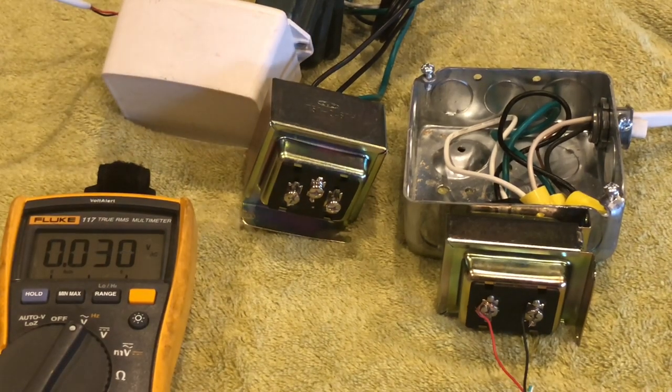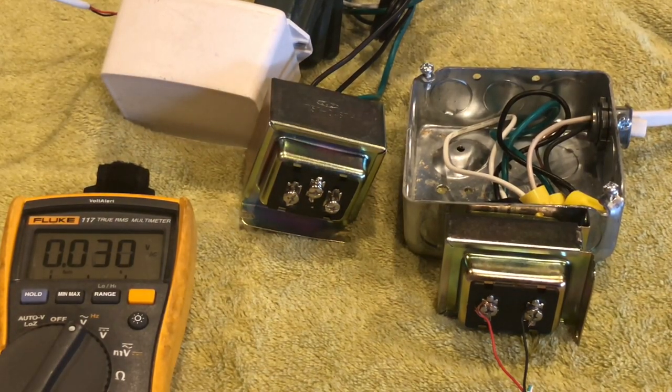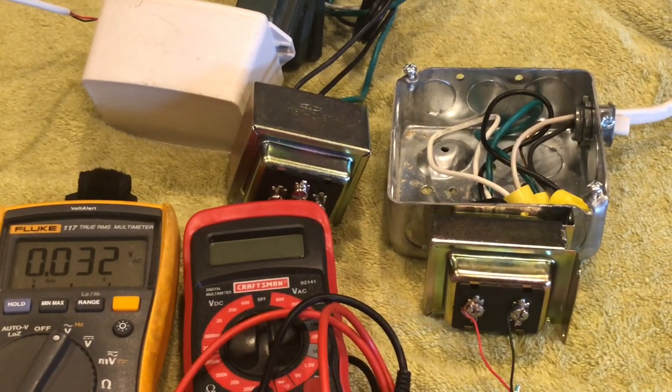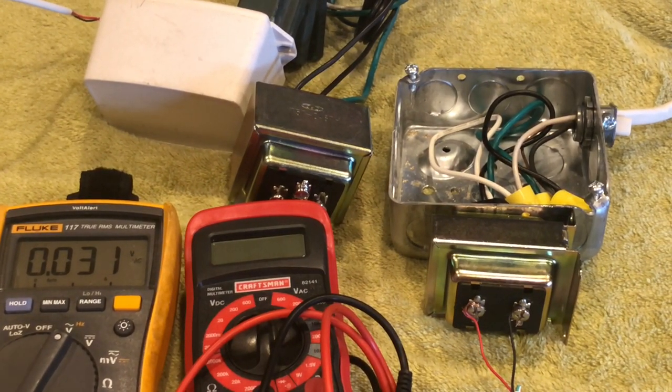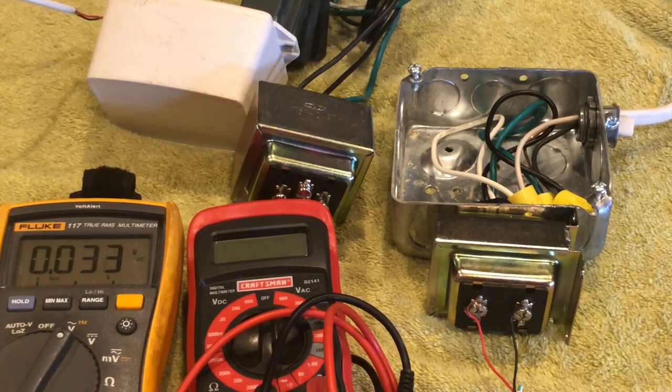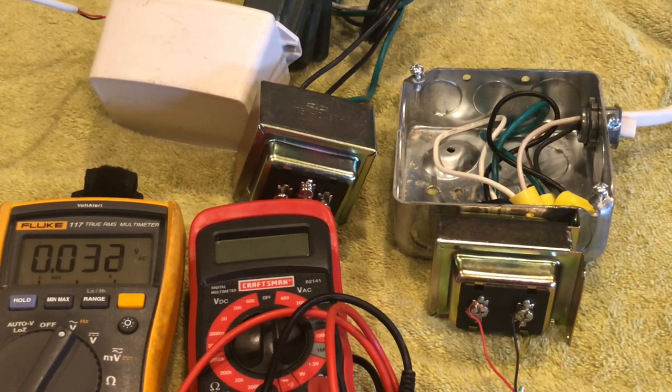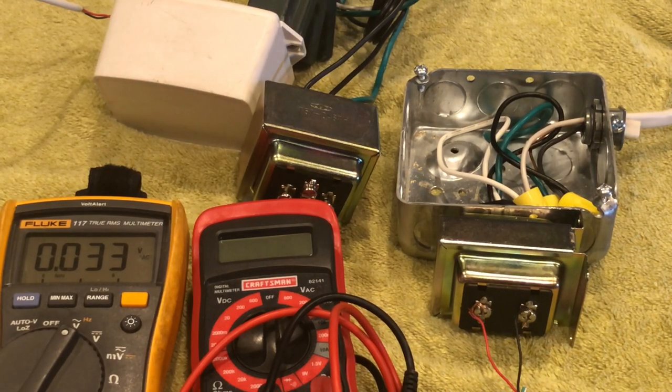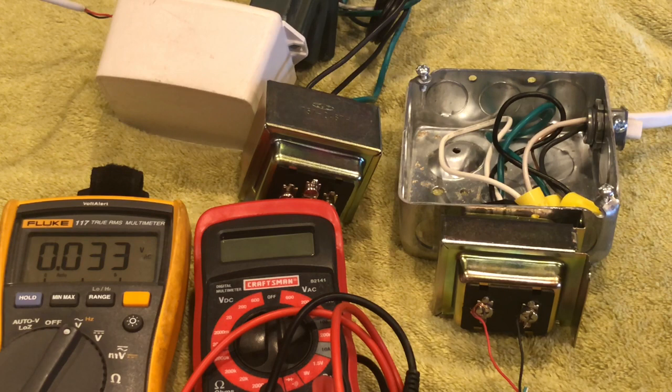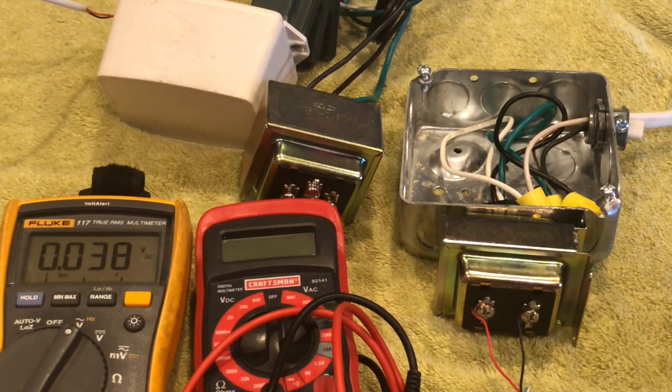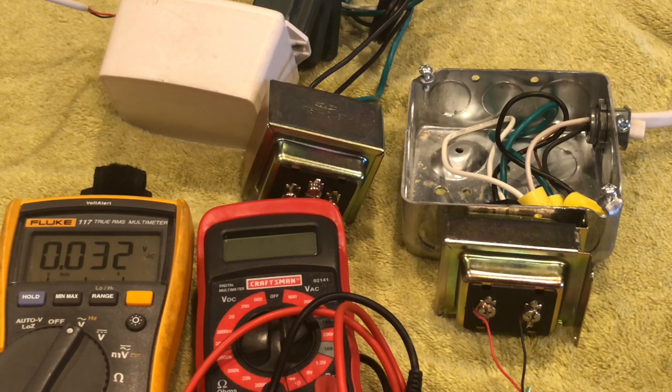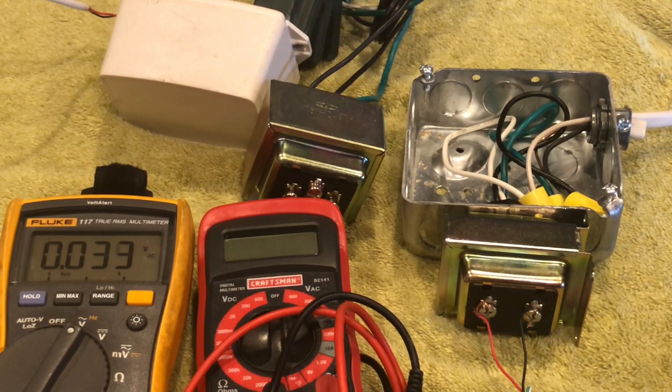So I would recommend that you pick up the Sears Craftsman meter. It's really actually a pretty good meter. You can pick it up anywhere from 11 to 20 dollars - they put it on sale quite often. And then I would go home, test what your doorbell is putting out, and if it's less than 16 volts, then you know you need to upgrade.